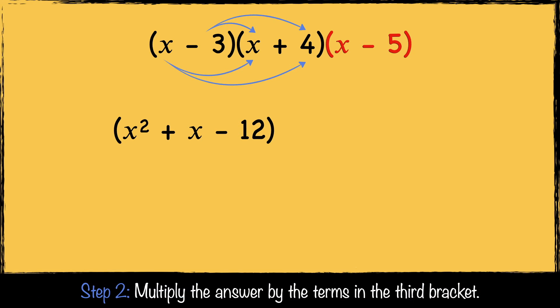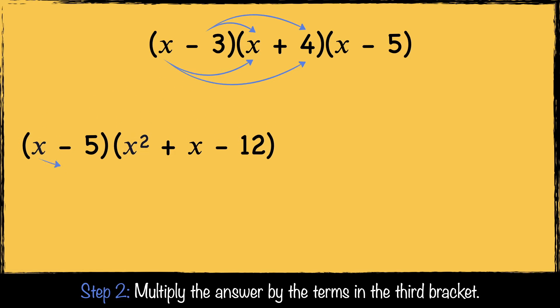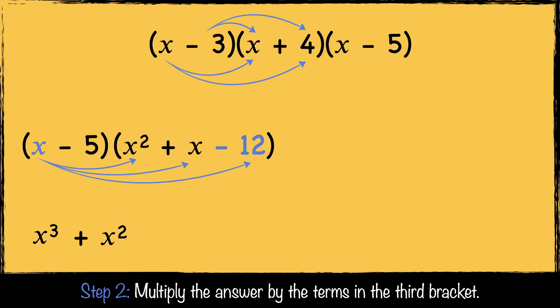Now we're on to step 2, where we multiply the answer by the terms in the third bracket. It's easier to place the shortest bracket at the start. So x multiplied by x squared is x cubed, x multiplied by x is x squared, and x multiplied by minus 12 is minus 12x.